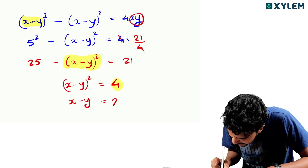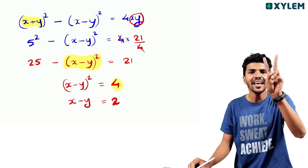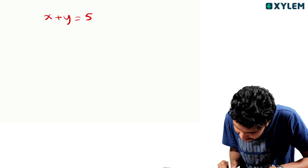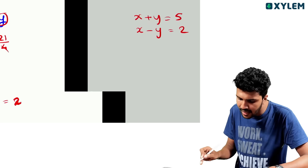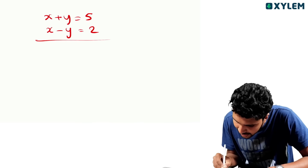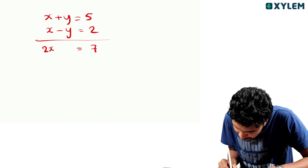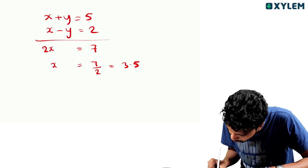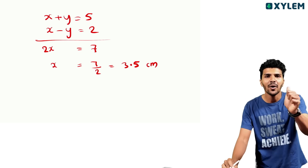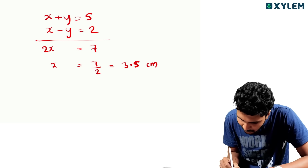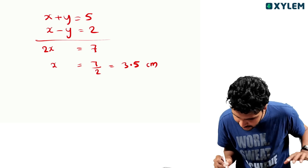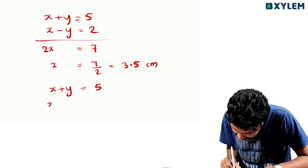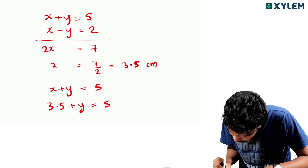So x minus y equals 2, and x plus y equals 3.5 plus y is equal to 5. So x minus y is 2 and x plus y is 5.